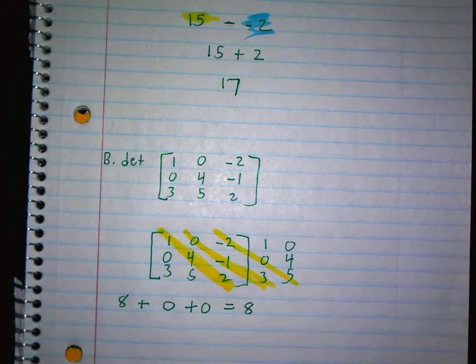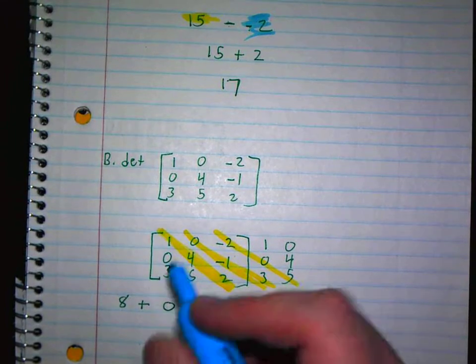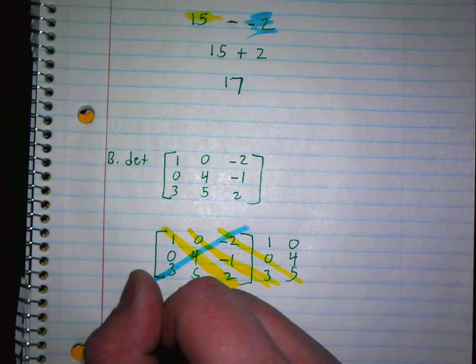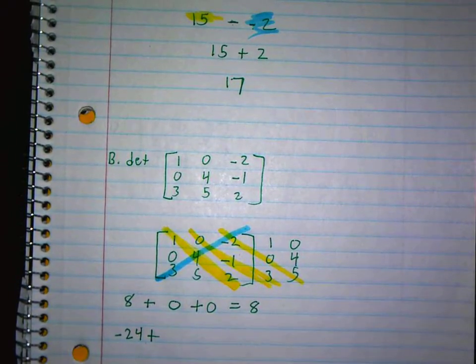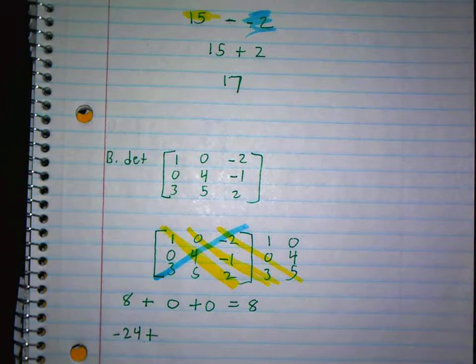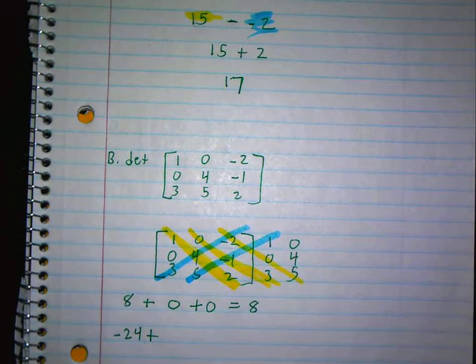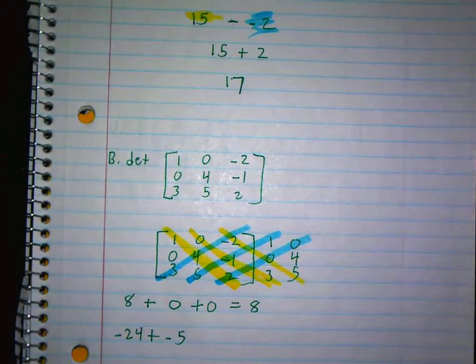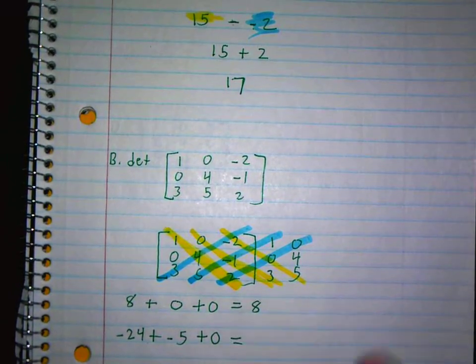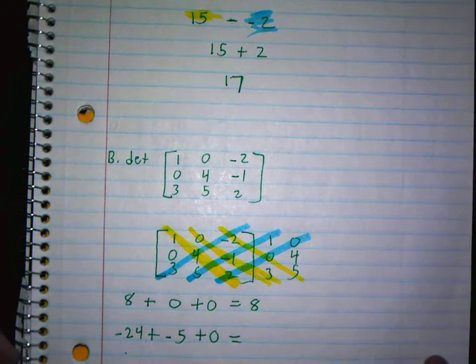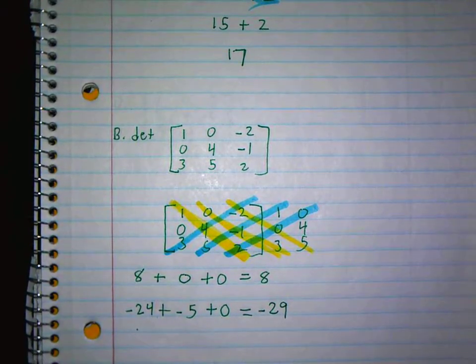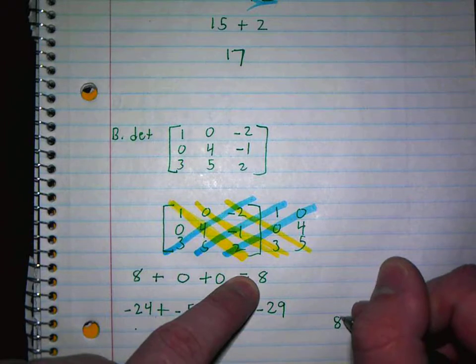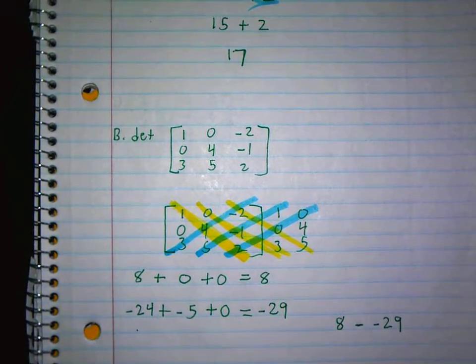Now we're going to go the other diagonal. You're going to go 3 times 4 times negative 2, which is negative 24. Kids do get confused because we were subtracting here and now we're adding, so kind of keep that straight in your head. And then 5 times negative 1 times 1 is negative 5. And then 2 times 0 times 0 is 0. What is negative 24 plus negative 5 plus 0? Negative 29. Now you have two numbers. It's like this is our AD and this is our BC from before. So you're going to take 8 minus negative 29.